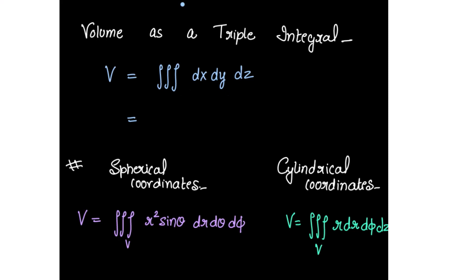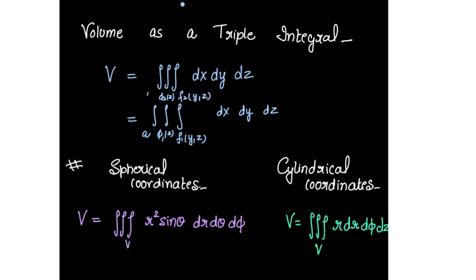If you want the limits in detail: the innermost integral, which is in x, will always have limits in two variables — that is f1(y,z) and f2(y,z). The limits for y are always in one variable, that is φ1(z) and φ2(z). And for z, the limits are constant — you can write it as a to b. So the innermost integral always has limits in two variables, and the outermost integral always has constant limits.